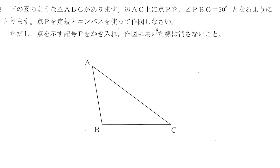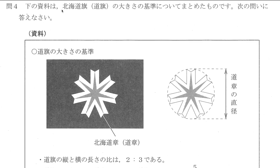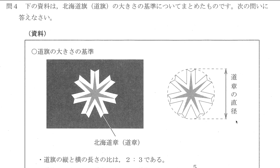問3はコンパスと定規を使って作図をしなさいとありますが、パソコン上でコンパスを使うことは難しいのでこの問題は飛ばします。下の図のような三角形ABCがあります。辺AC上に点Pを角PBCイコール30度となるようにとり、点Pを定規とコンパスを使って作図しなさい。